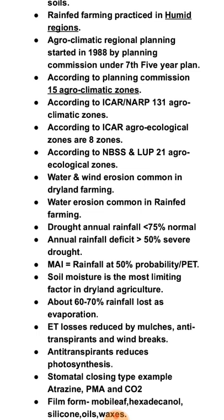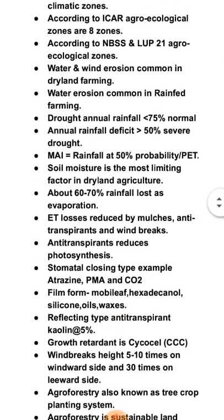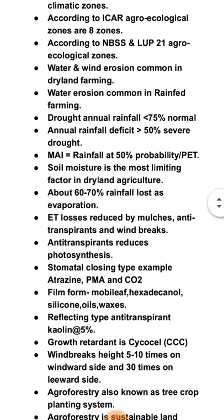Soil moisture is the most limiting factor in dryland agriculture. About 60 to 70% of rainfall is lost as evaporation and evapotranspiration losses. These losses are reduced by mulching, antitranspirants, and windbreaks. Antitranspirants reduce evapotranspiration and also reduce photosynthesis through stomatal closing.